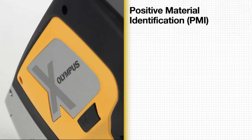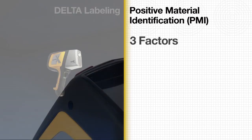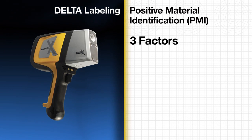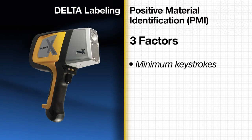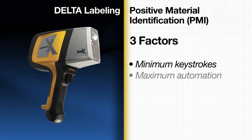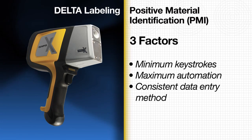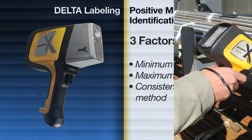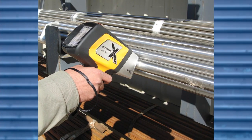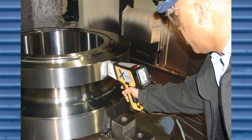Creating useful, easy, real-time test labeling has to satisfy three factors: minimum keystrokes, maximum automation, and a consistent data entry method. The combination of these guarantees reliable and traceable testing and reporting.